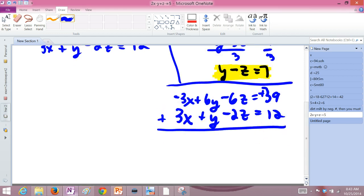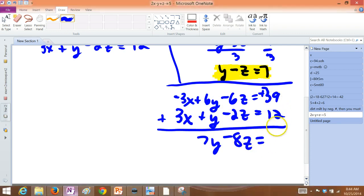And we want to add these guys together. It should give us a different equation in y and z. The x's are gone. Now you're going to have 7y minus 8z being equal to 51.